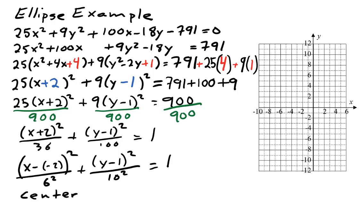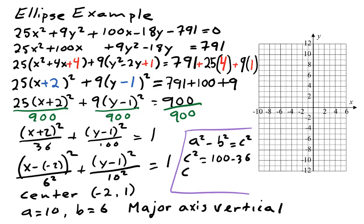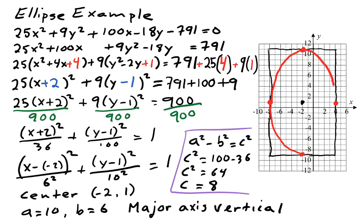This gives us a center at negative 2, 1. A is the larger of the two numbers squared in the denominators, so it's 10; B is 6. The 10 is under the y, so the major axis is vertical. For the foci, C squared equals A squared minus B squared: 100 minus 36 is 64, so C equals 8. Under the x we have 6 squared, so we go 6 spaces left and right of center. Under the y we have 10 squared, so we go 10 spaces above and below. The vertices are at the centers of the sides of the box. We draw the ellipse through the vertices, then place the foci 8 spaces up and down from the center.